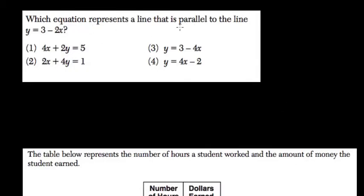Which equation represents a line that is parallel to this line right here? Lines are parallel if the slopes are equal and the y-intercepts are different. If the y-intercepts were the same, it would just be the same line. That would be called collinear.